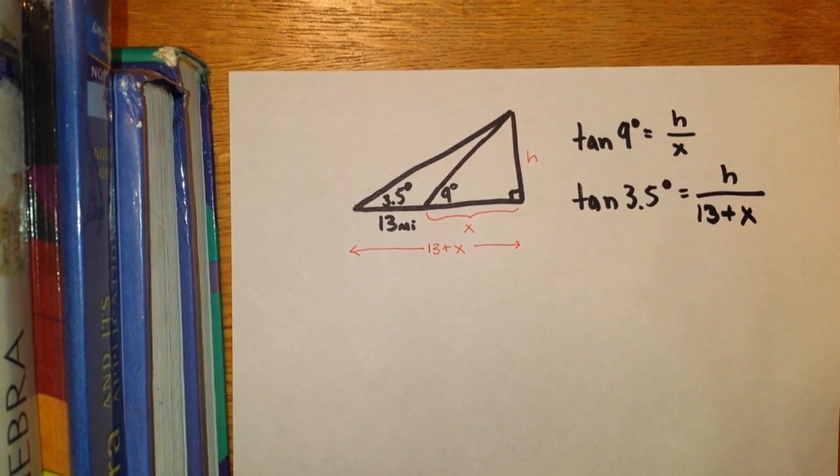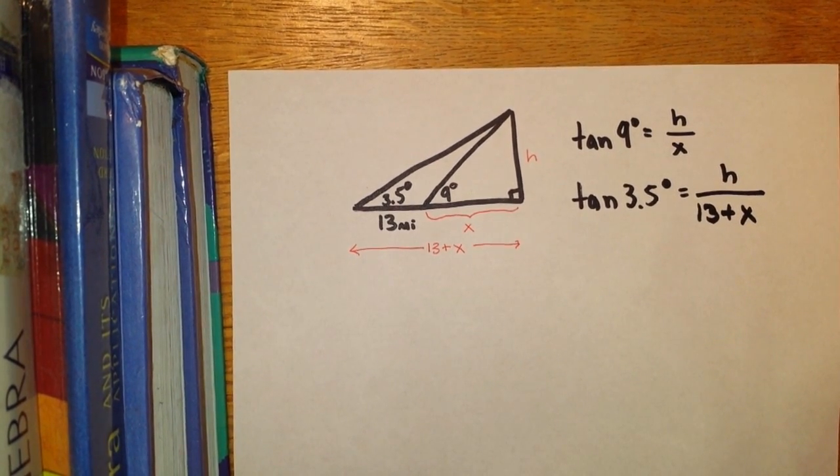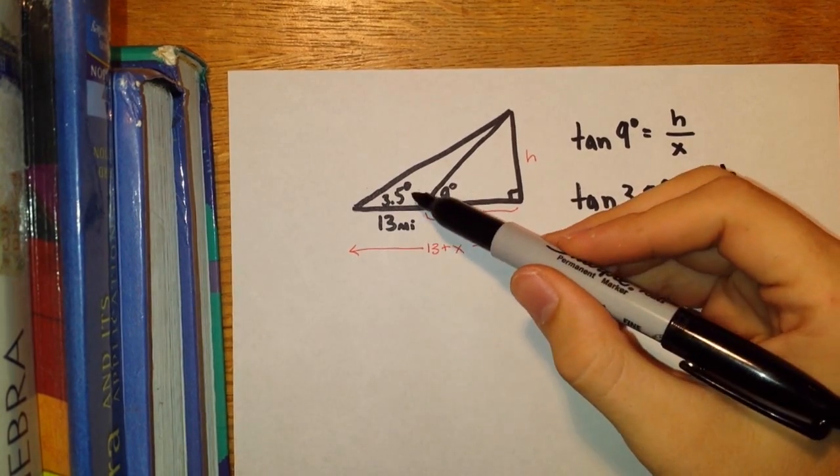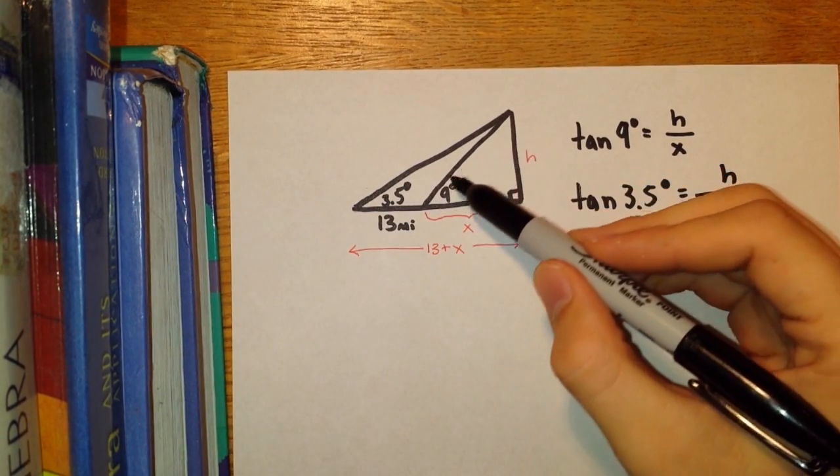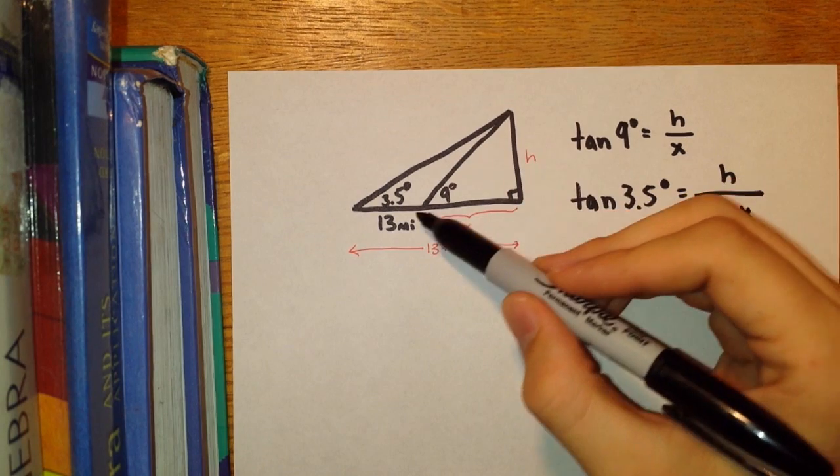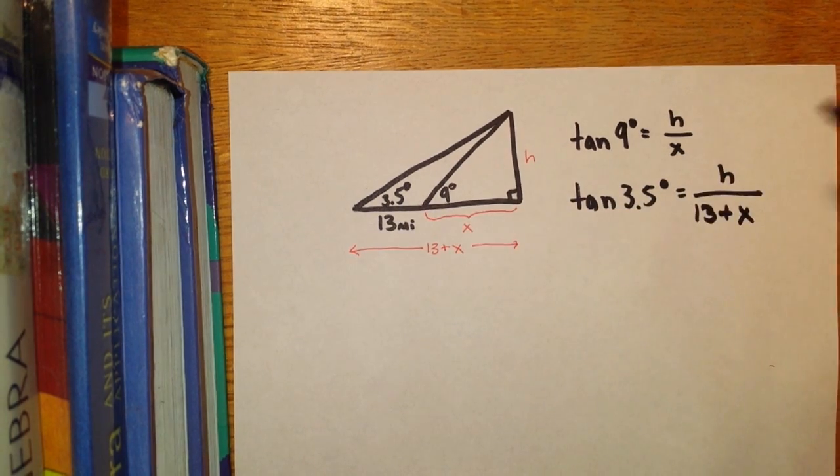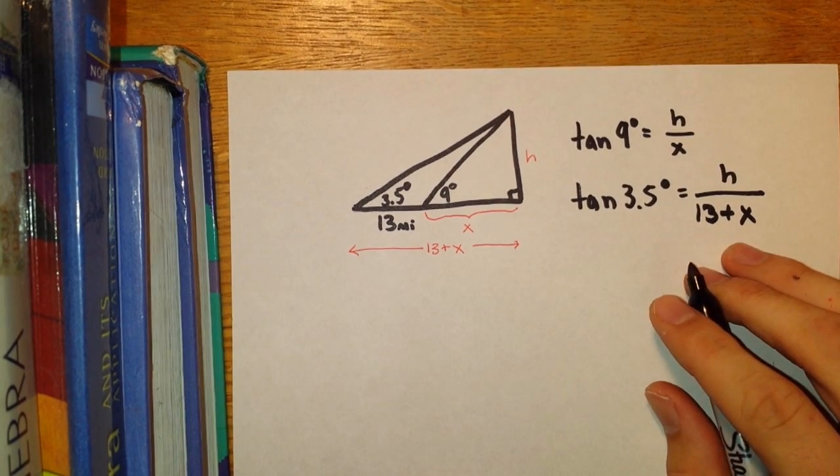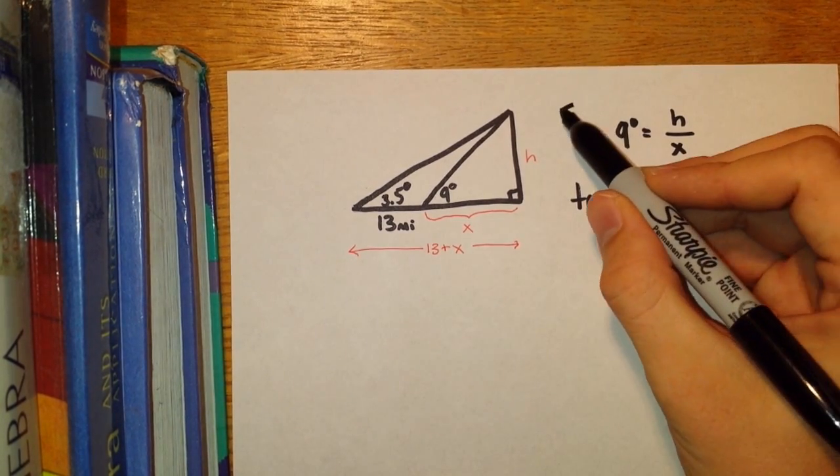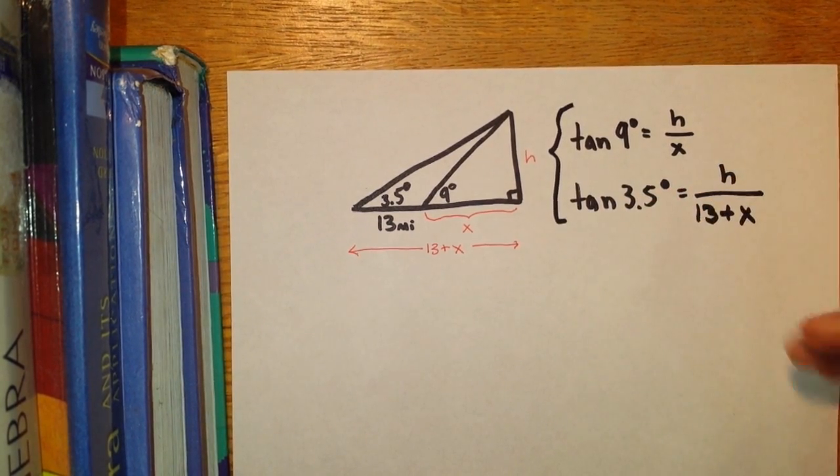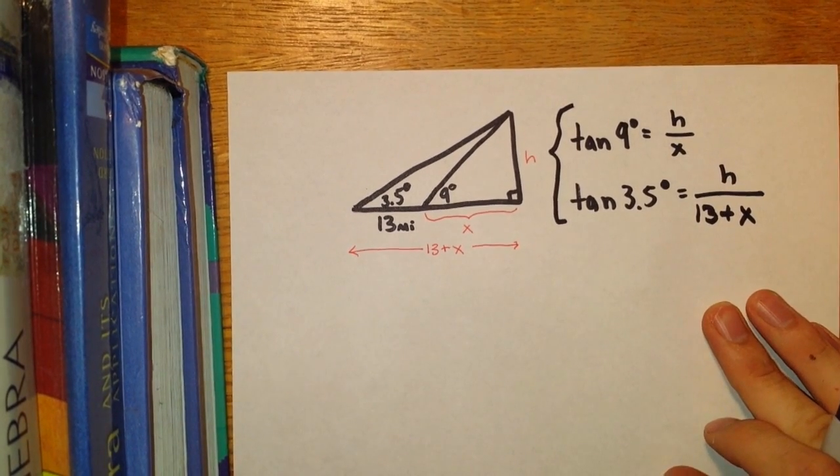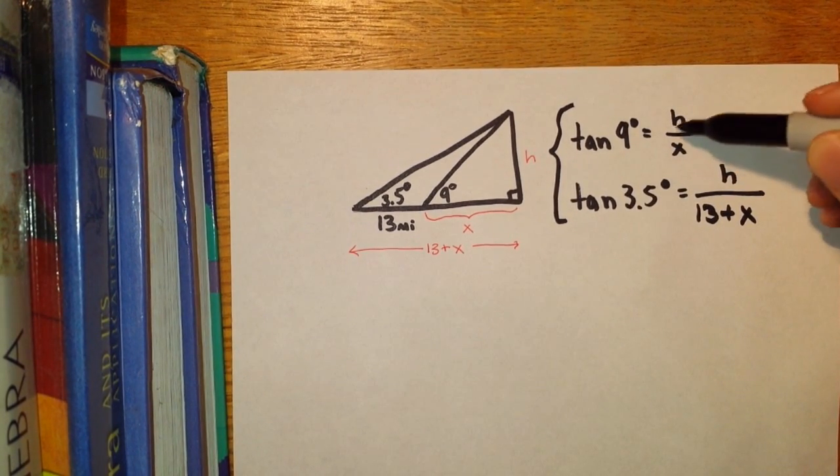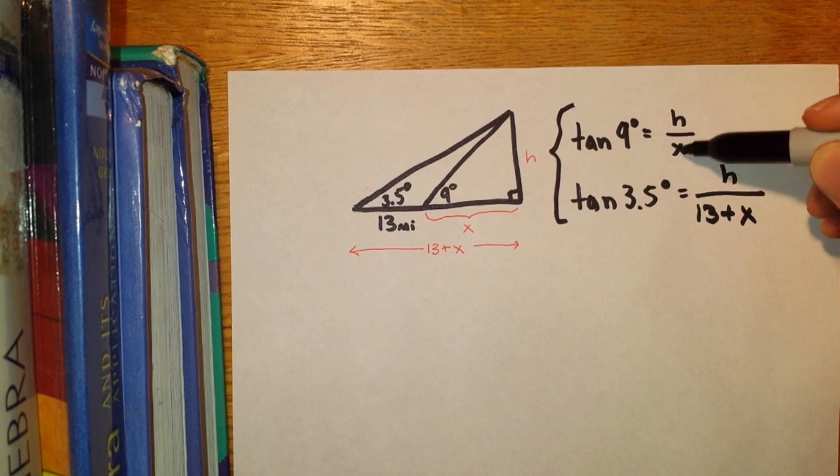Initially, one might think we don't have enough information to solve this equation. We can't use right triangle trigonometry on this triangle here because it's not a right triangle. We don't know H, we don't know X. But if we write this as a system of equations, what we're able to do is solve the top equation for one of these two variables.